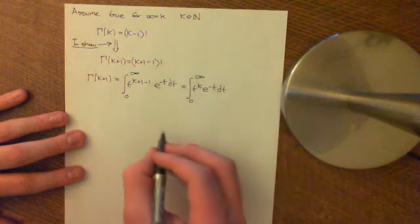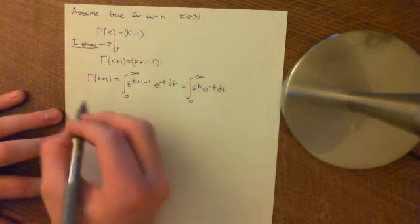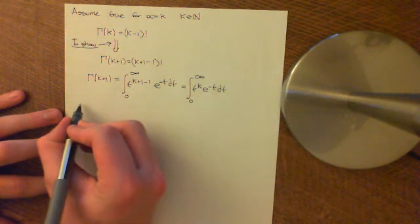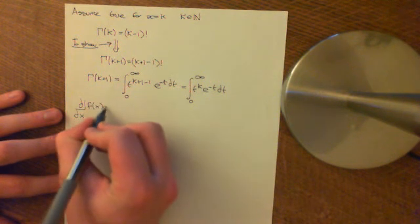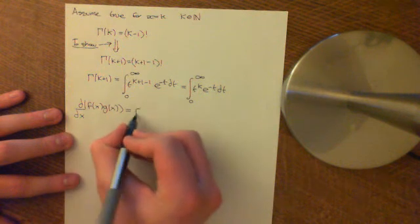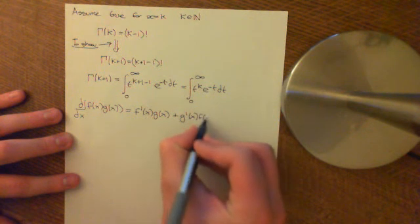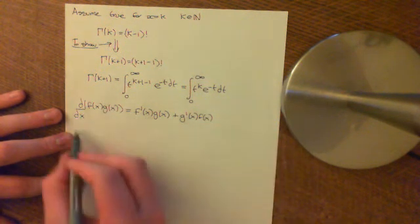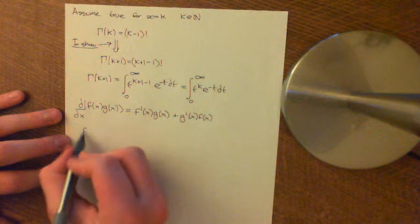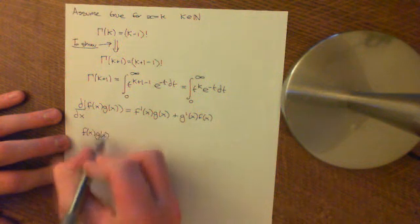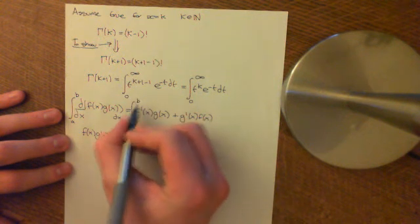Now we're going to apply integration by parts. A quick recap of the formula: differentiating f(t)·g(t) by the product rule gives f'(t)·g(t) plus g'(t)·f(t). Anti-differentiating both sides and integrating between a and b gives us: integral from a to b of f'(t)·g(t) dt equals [f(t)·g(t)] from a to b, which is f(b)·g(b) minus f(a)·g(a), plus the integral from a to b of g'(t)·f(t) dt.